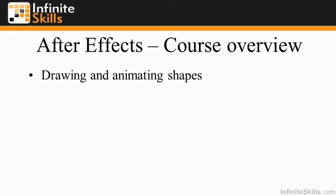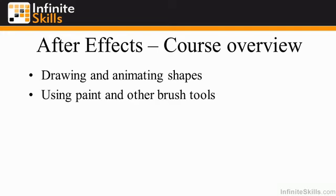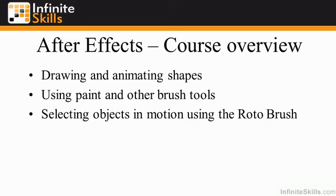I'll explain how you can draw and animate shapes, how you can use paint and other brush tools, and how you can select objects in motion using the roto brush tool. This is really pretty amazing — in Photoshop, you can select an object using various selection tools, but it's just a static object. In After Effects, you can select something that's moving and then lift it off of the background. That's pretty remarkable.